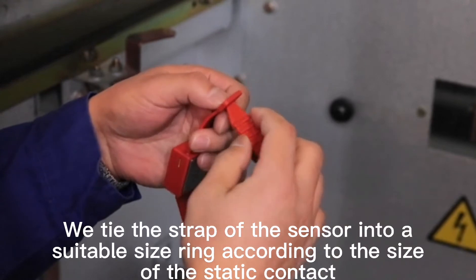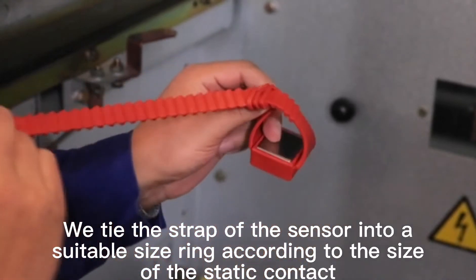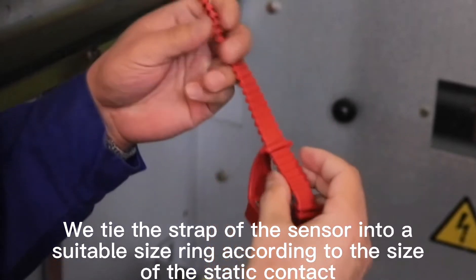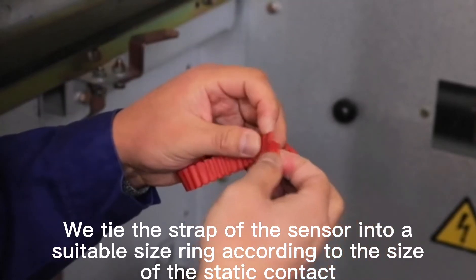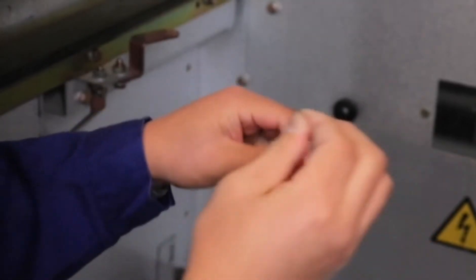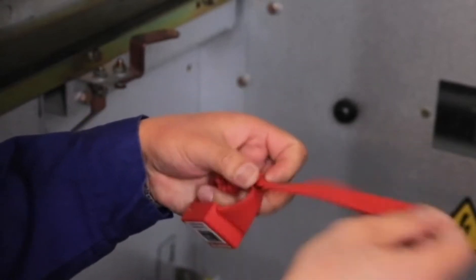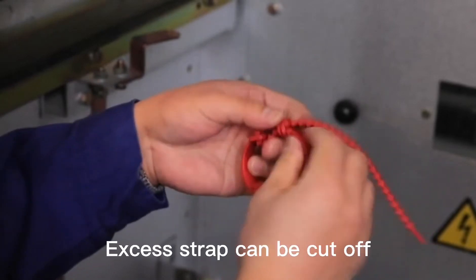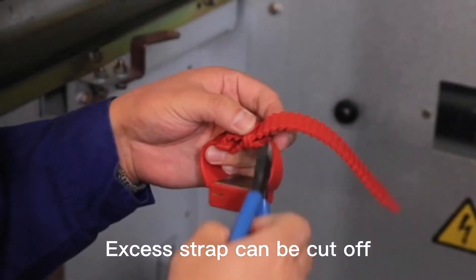We tie the strap of the sensor into a suitable size ring according to the size of the static contact. Excess strap can be cut off.